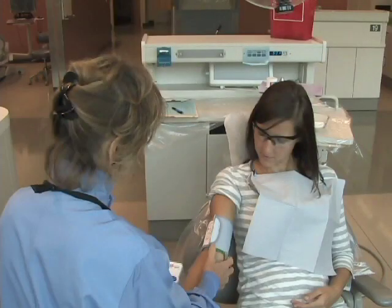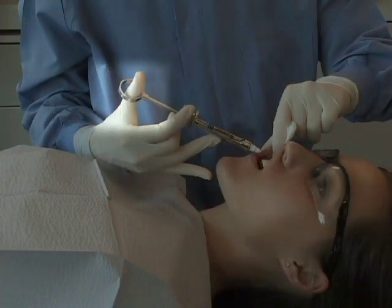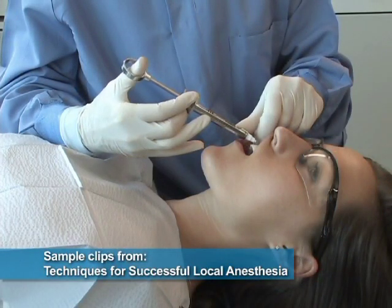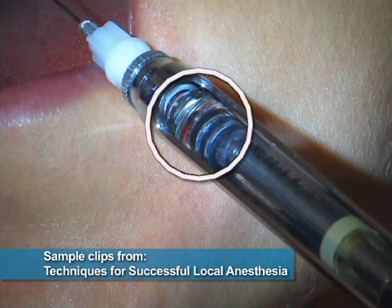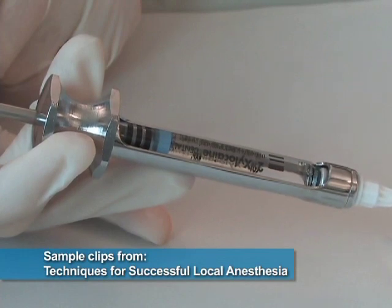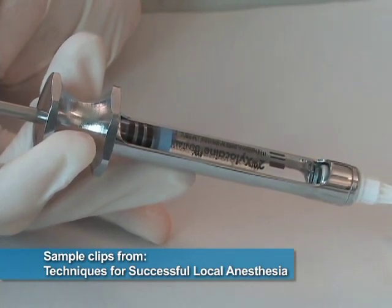The first unit discusses basic injection techniques that should be utilized when administering any type of local anesthesia injection. If aspiration is positive, assess the amount of blood that has entered the cartridge. If there is just a small trickle, re-aspirate and, if negative the second time, continue with depositing. Remember that the anesthetic cannot be deposited any faster than one minute per carpule.